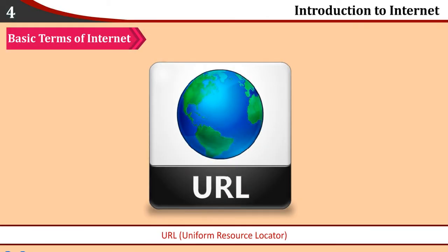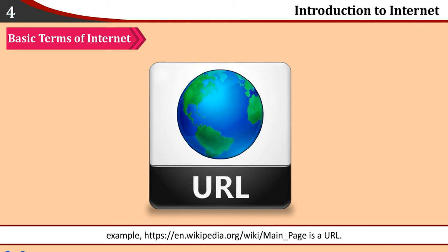URL. A URL is the unique address of a website that is accessible on the internet. For example, https://en.wikipedia.org/wiki/Main_Page is a URL.